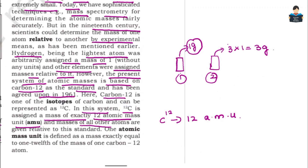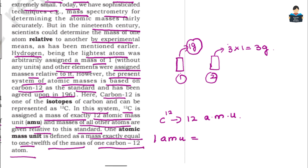The masses of all other atoms are given relative to this standard. One atomic mass unit, 1 amu, is defined as the mass exactly equal to one-twelfth of the mass of one carbon-12 atom.